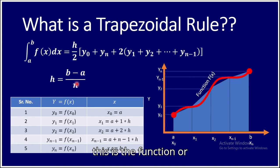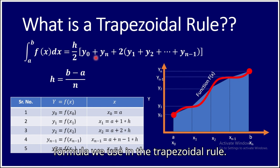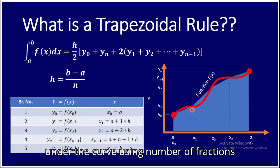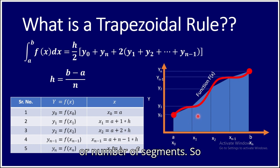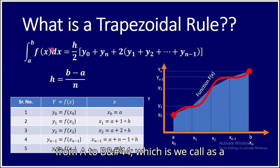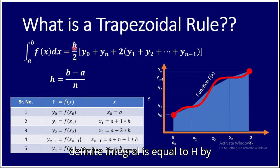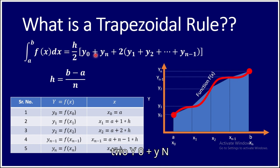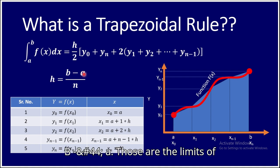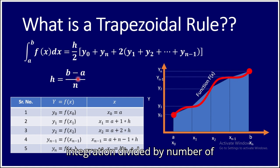This is the formula we use in the trapezoidal rule. It approximates the area under the curve using a number of segments. If we have to integrate function f(x)dx from a to b — which is a definite integral — it equals h/2 times [y0 + yn + 2 times the remaining terms], where h is given by (b minus a) divided by n, and n is the number of segments.